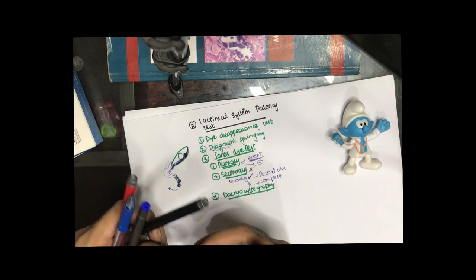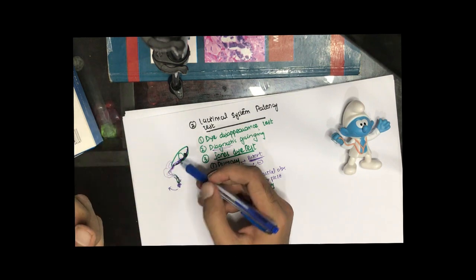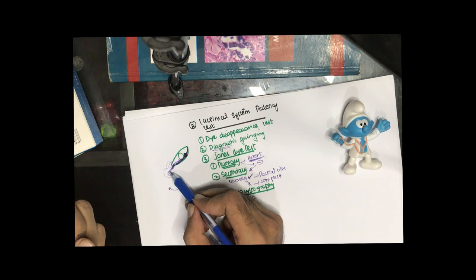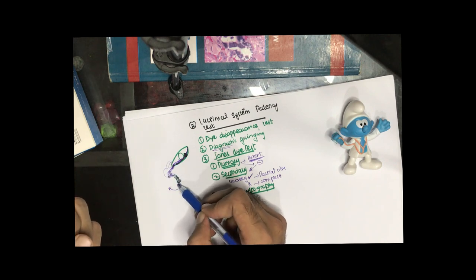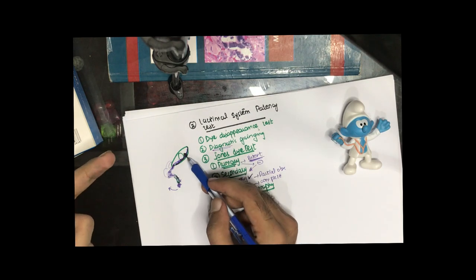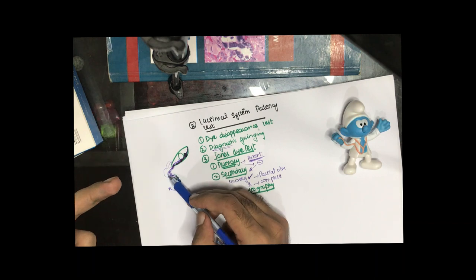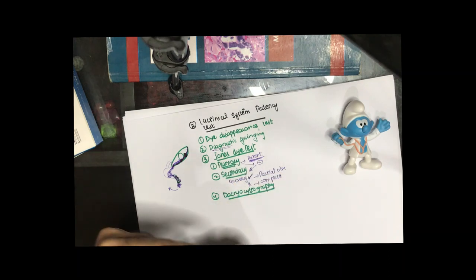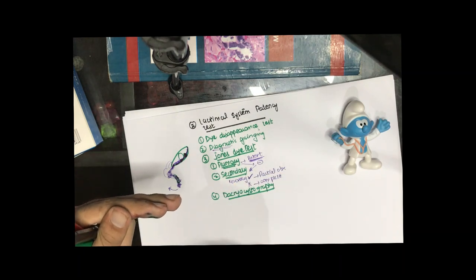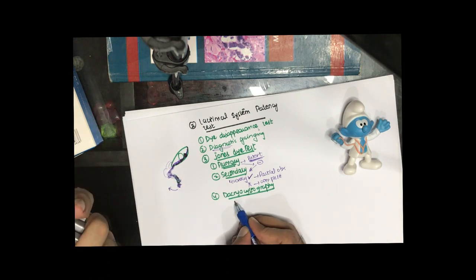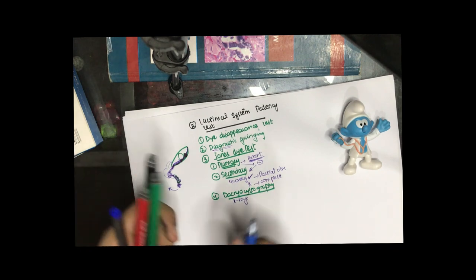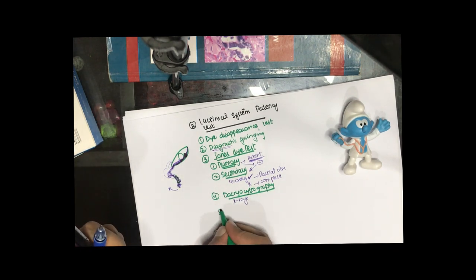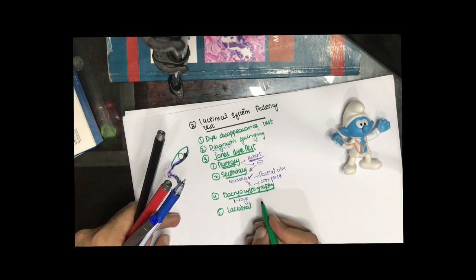Dacryocystography involves injecting a contrast medium into the eye and then taking multiple X-rays to trace where the contrast medium passes. We can identify at which level the contrast stops passing, which tells us the exact level of obstruction in the lacrimal system.